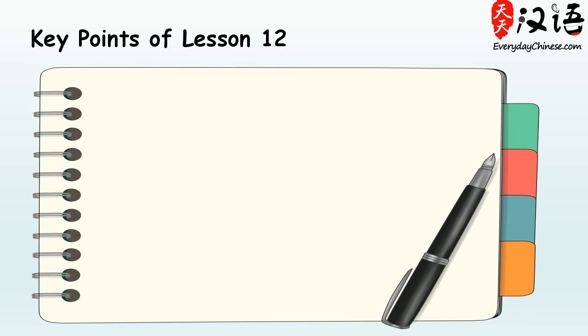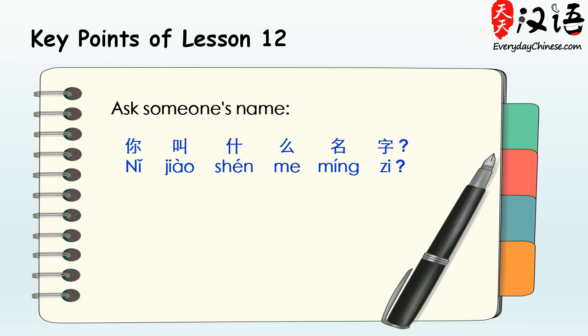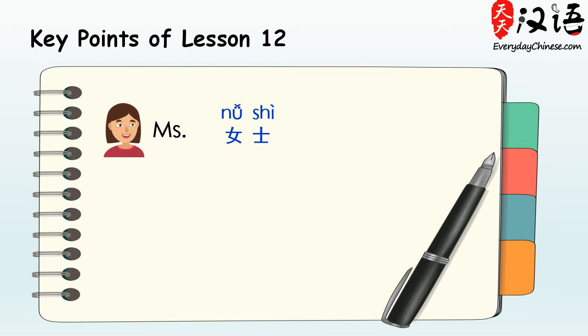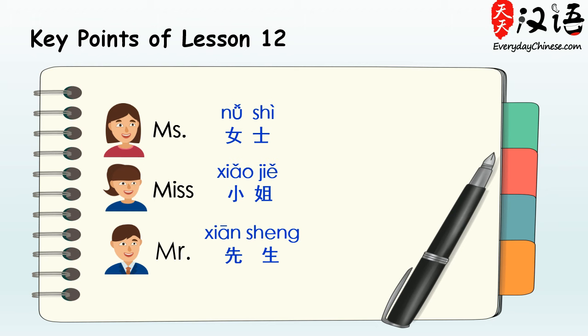Up to now, we've learned how to ask for someone's name — 你叫什么名字 — and how to ask for someone's surname — 您贵姓. Can you introduce your name and surname? Don't forget to use 女士, 小姐, and 先生 to address the person to show more respect.